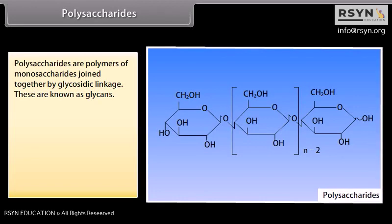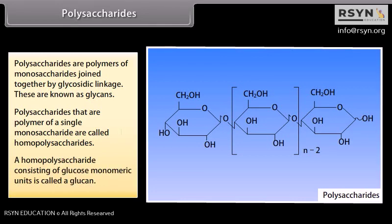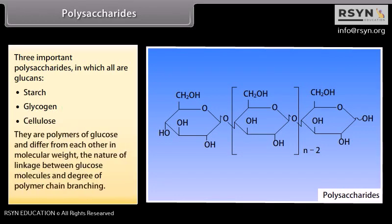Polysaccharides are polymers of monosaccharides joined together by glycosidic linkage, also known as glycans. Polysaccharides that are polymers of a single monosaccharide are called homopolysaccharides. A homopolysaccharide consisting of glucose monomeric units is called a glucan. Three important polysaccharides — all glucans — are starch, glycogen, and cellulose. They are polymers of glucose and differ in molecular weight, the nature of linkage between glucose molecules, and degree of polymer chain branching.